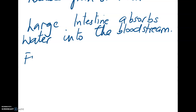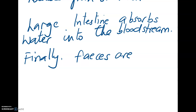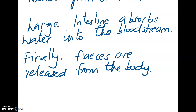Finally, to finish the process of digestion, feces are released from the body. Feces are all the unwanted and undigested bits of food that the body no longer needs. In summary, digestion starts with nutrients in large molecules, which get broken down into smaller molecules that are absorbed by the bloodstream. The food passes through the major organs of the digestive system, and anything not wanted is released as feces.